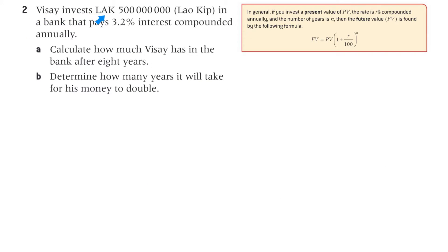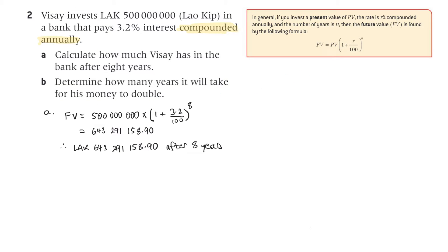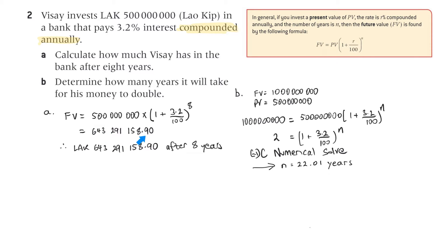Question two. Visay invests 500 million Lao Kip in a bank that pays 3.2% interest compounded annually. Part A: calculate how much Visay has in the bank after eight years. The present value is 500 million, the interest rate is 3.2%, and the period is eight years. We get 643,291,158.90 — make sure you have two decimal places.